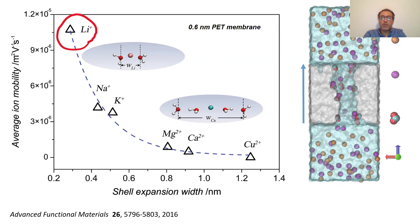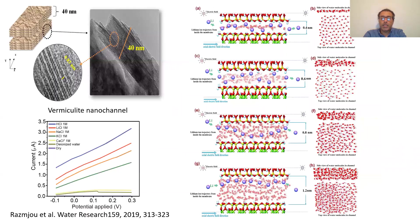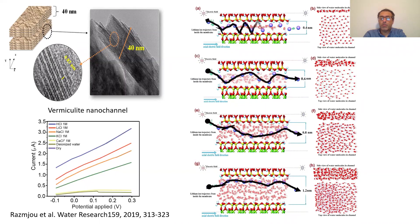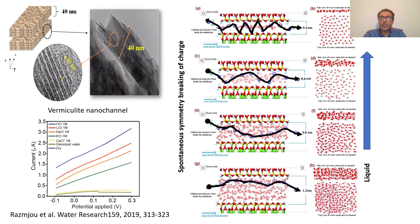This is the first generation lithium-ion selective vermiculite membrane that we started working on in 2017 and published in 2019 in Water Research. We discovered that when we reduced the nanochannel size from above 1 nanometer to 0.4 nanometers, ions transport in a zigzag fashion using the top and bottom surfaces — due to a spontaneous symmetry breakage of charge. We also found that water molecules begin to form an ice-like structure as the size reduces, and we think this zigzag transport mode and ice-like water structure are the main mechanisms for lithium-ion selectivity in this case.